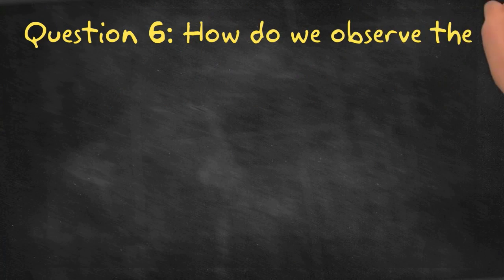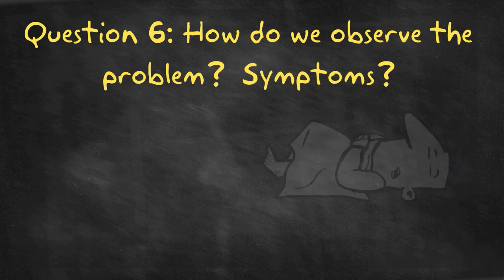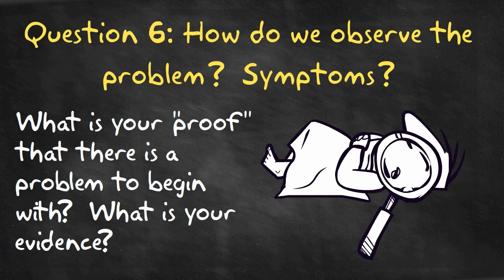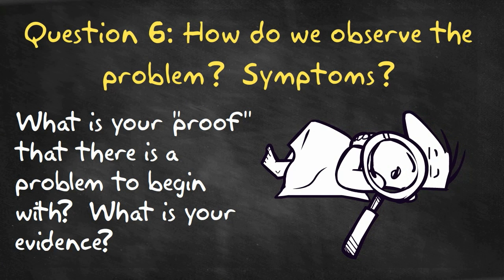Question number six: How do we observe the problem? Symptoms. What is your proof that there is a problem to begin with? What is your evidence?